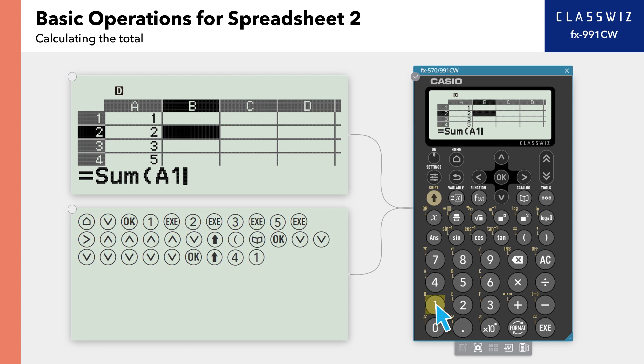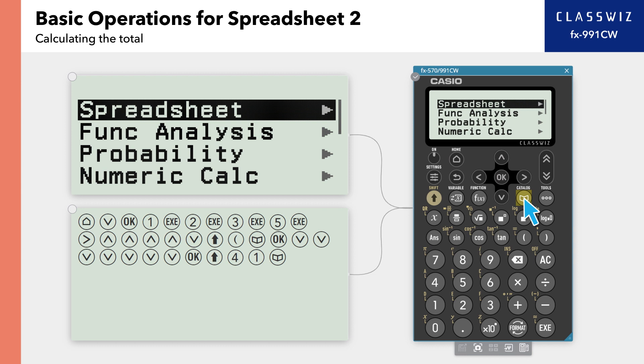Enter A1 and then a colon. You can find the colon under Catalog, then Spreadsheet.